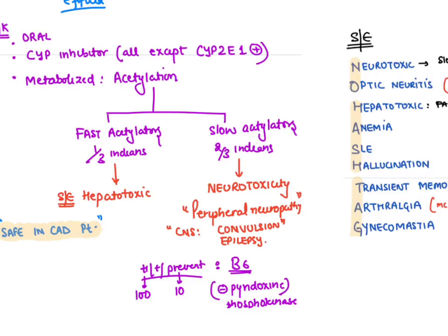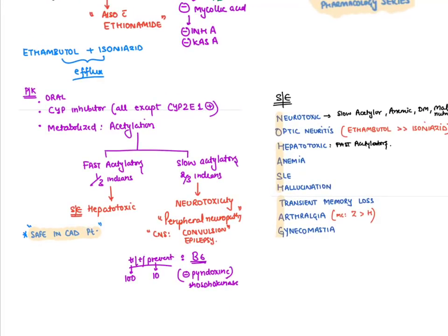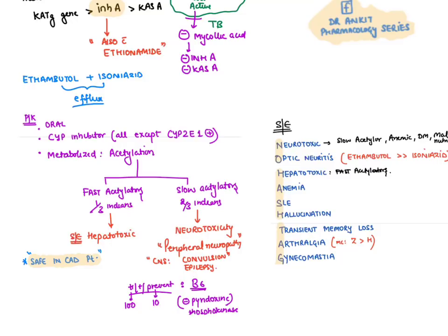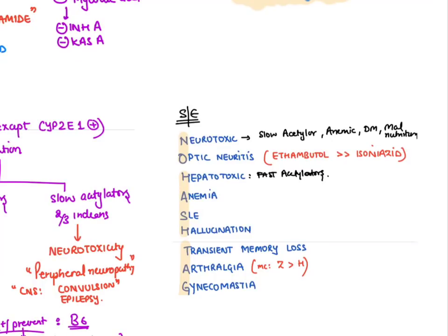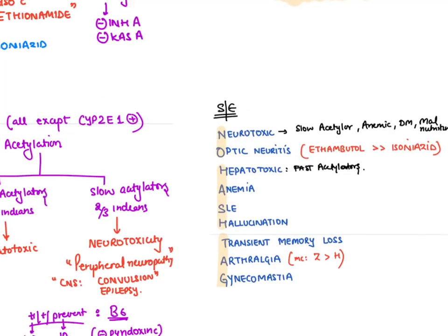In fast acetylators, isoniazid produces hepatotoxicity; in slow acetylators, it mainly produces neurotoxicity — peripheral neuropathy and convulsion/epilepsy — because it inhibits pyridoxine-dependent enzymes in neurons. For treatment and prevention of neurotoxicity due to isoniazid: give vitamin B6 (pyridoxine) — 100 mg for treatment, 10 mg for prevention. Side effects of isoniazid (mnemonic: NO HASHTAG): neurotoxicity in slow acetylators (anemic, malnourished, diabetic patients), optic neuritis (though the main optic neuritis drug is ethambutol), hepatotoxicity in fast acetylators, anemia, SLE, hallucination, transient memory loss, psychosis, arthralgia, gynecomastia.